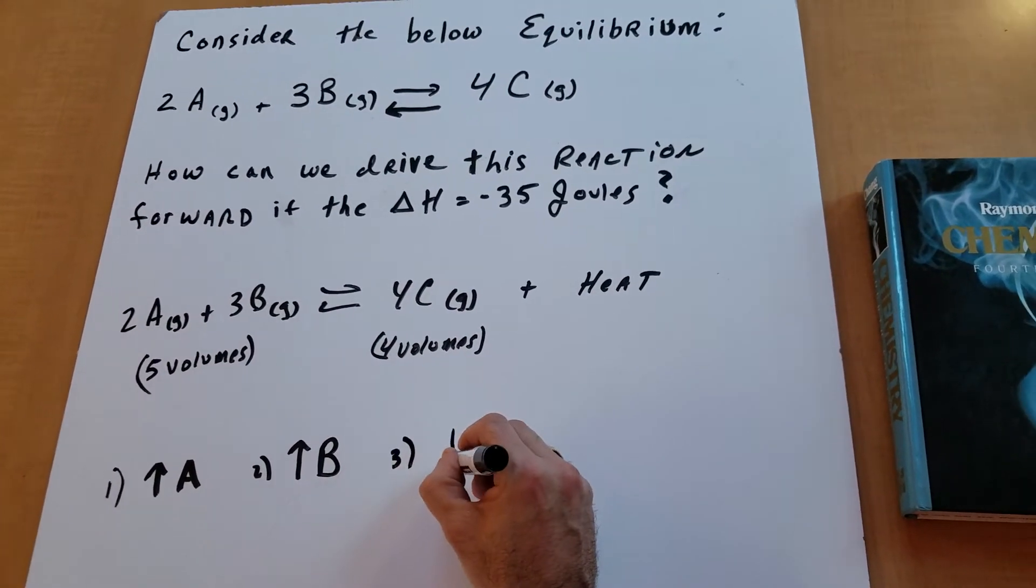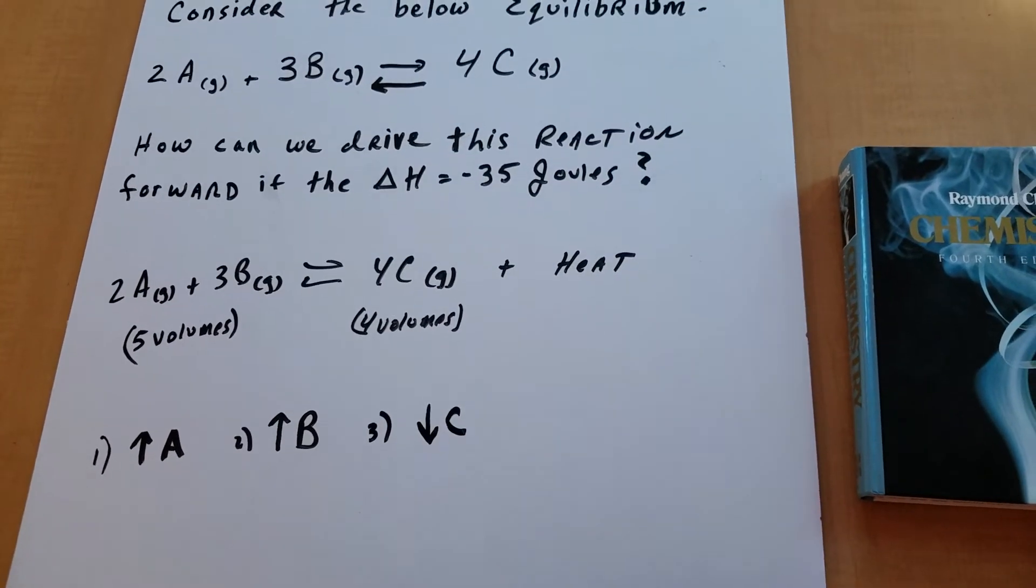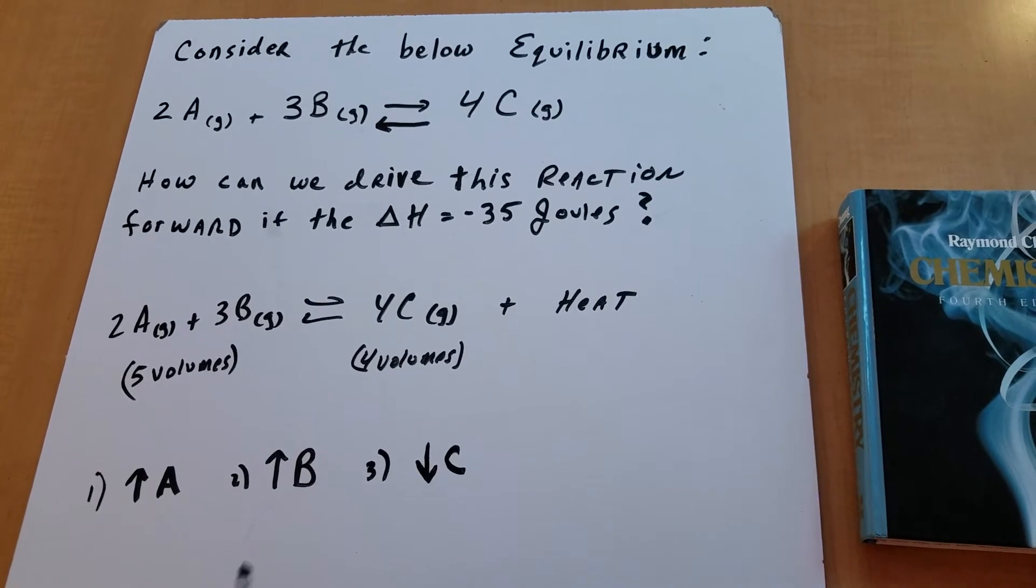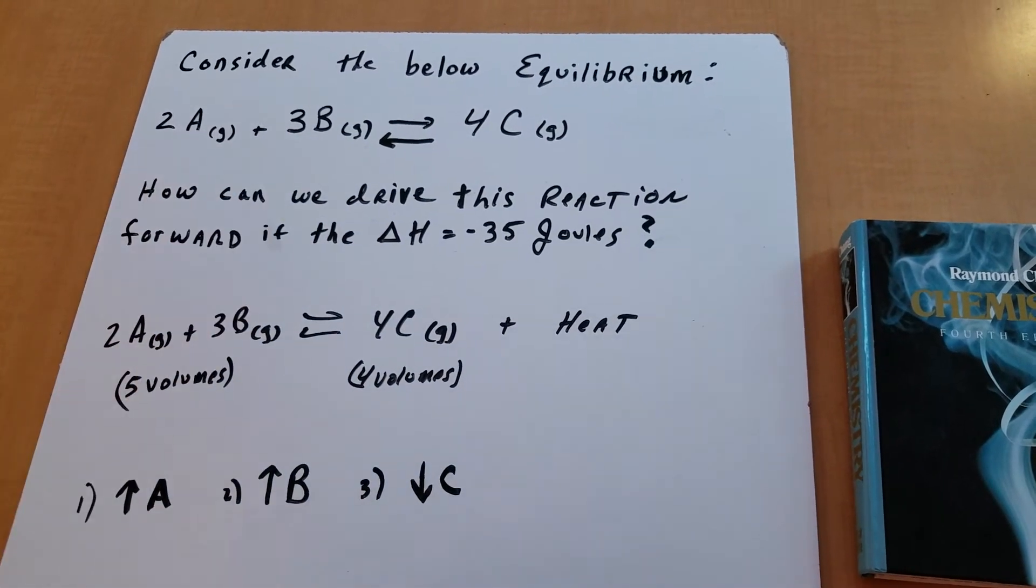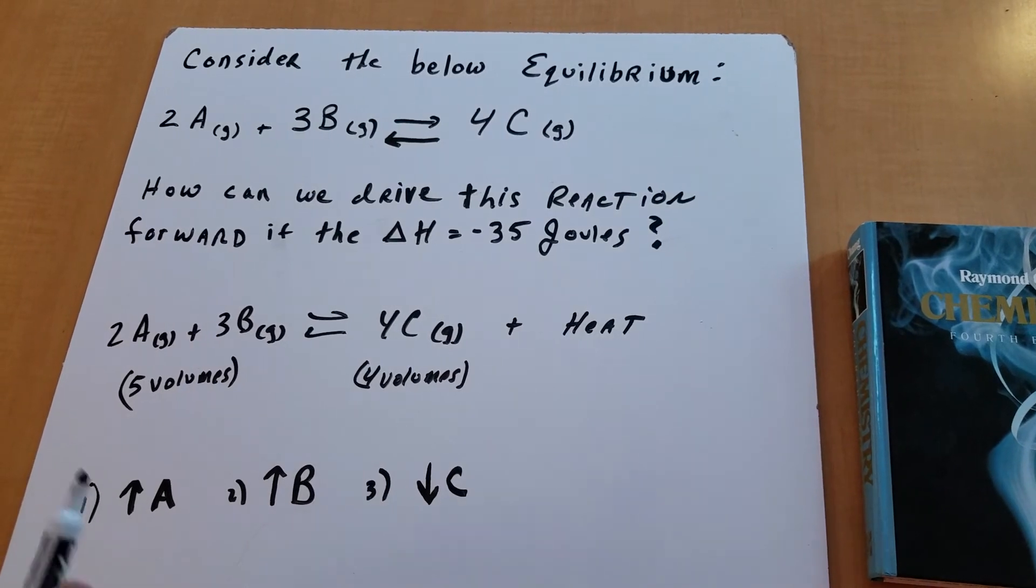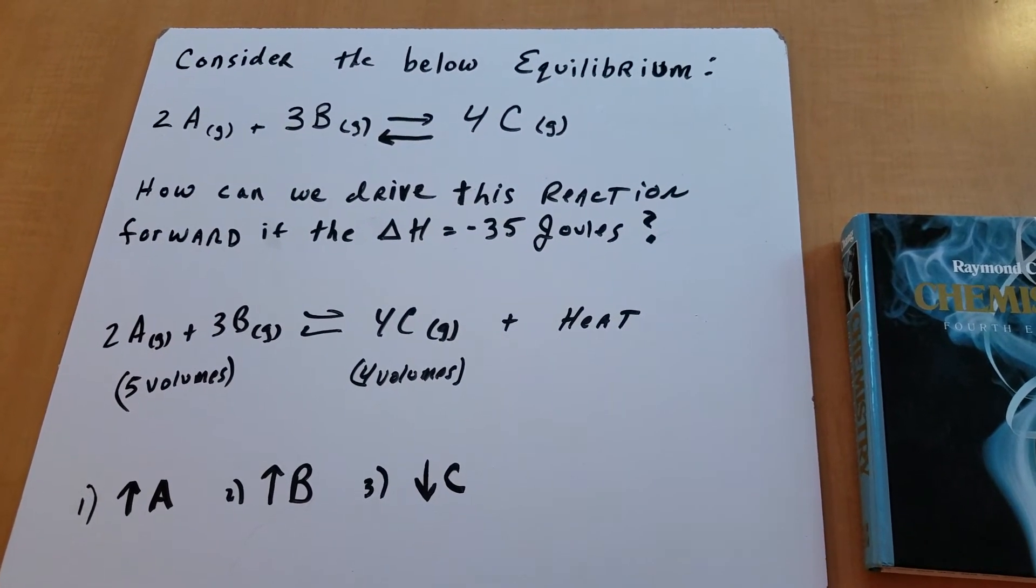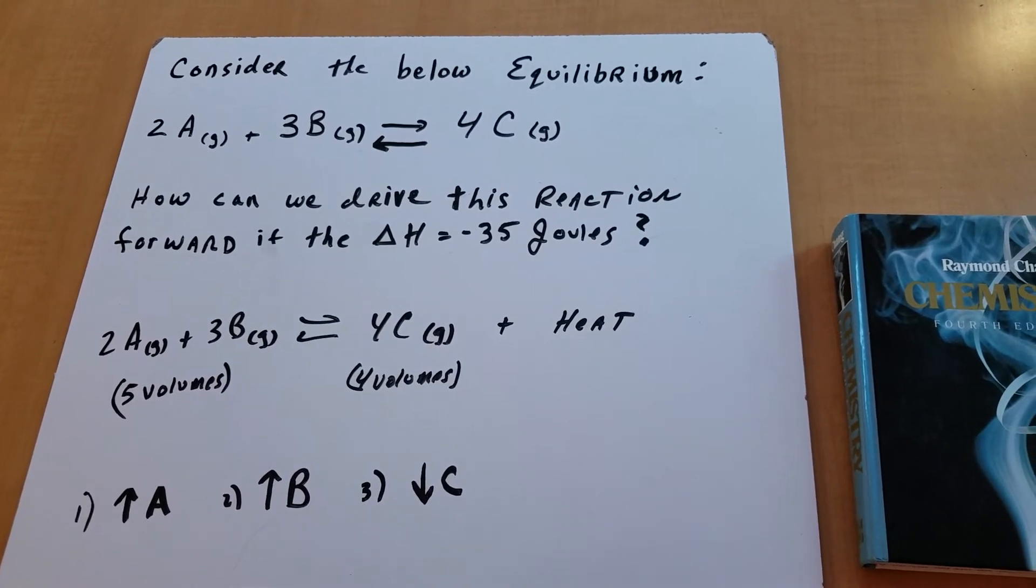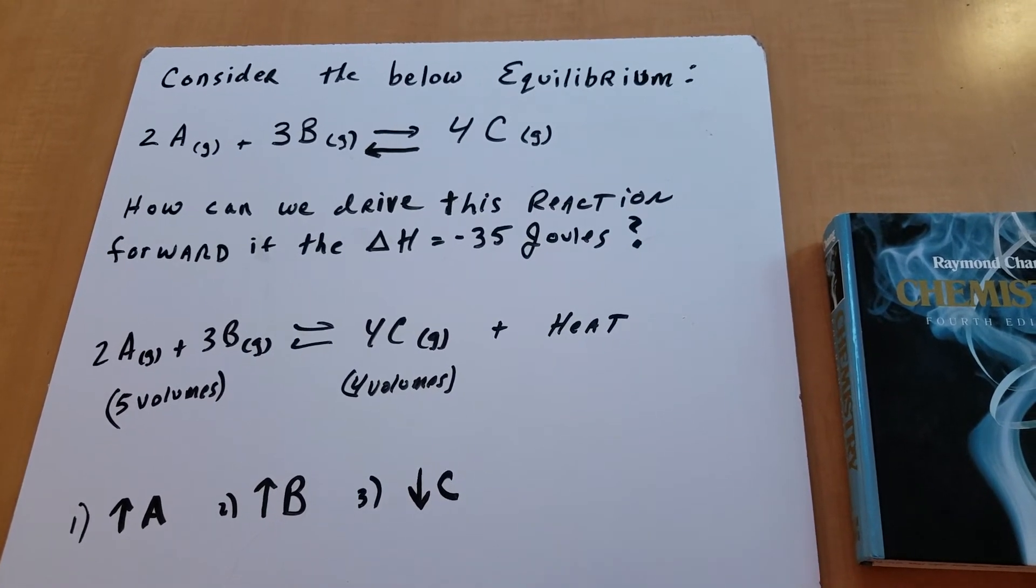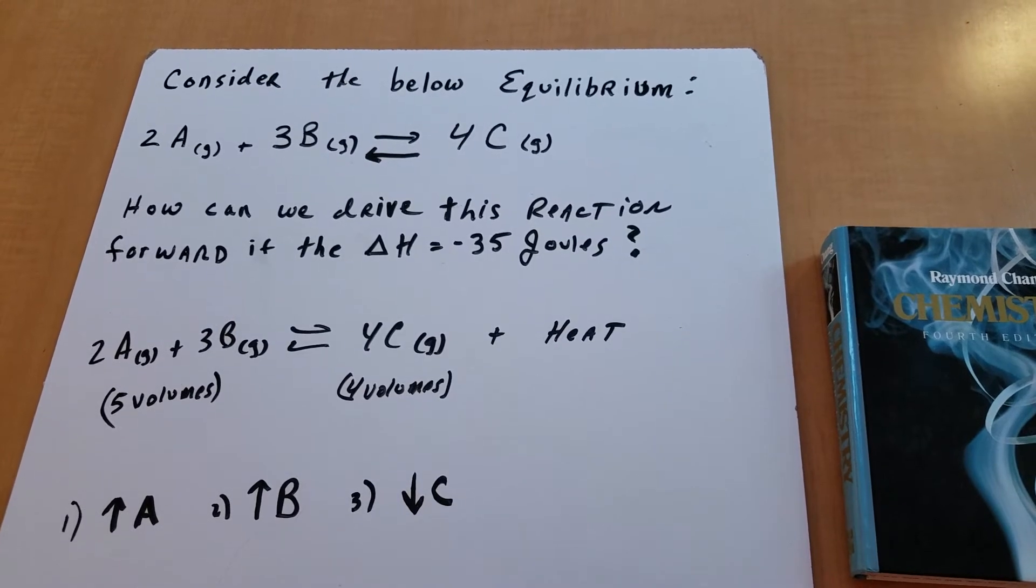Likewise, I can decrease the amount of C. If you decrease C, for instance, if this is removed, the system wants to replenish what's been lost. Just like if you lose blood, the body wants to make more blood. So what I can do is increase A, increase B, and decrease C would always be based on Le Chatelier's principle.